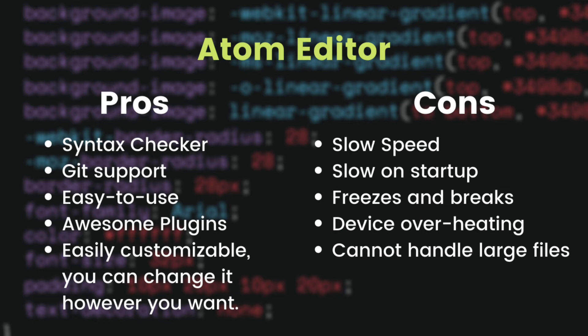Atom heats up your system almost every time you try to code. It cannot handle big files — when working with large codebases it keeps crashing and overheating. Switching between Atom and another app like Chrome is very tough because it keeps lagging. It consumes too much battery and memory, and sometimes it freezes and closes, causing you to lose written code. Device overheating is a major issue — you can literally hear the fan noise when using Atom.